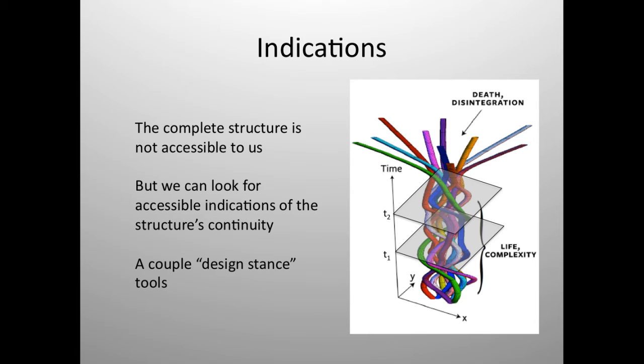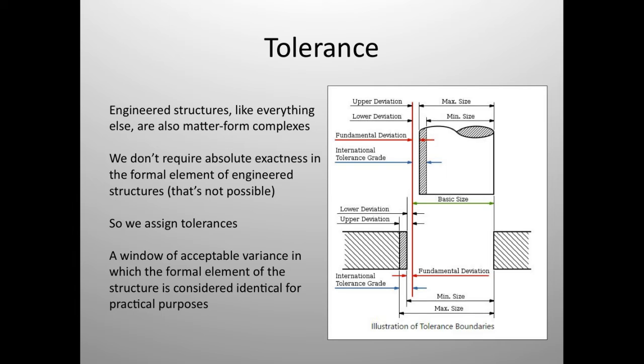Nevertheless, there must be some indications that we can draw from so that we can use this. So the complete structure, the 4D structure, isn't something that's accessible to us. We can't see the whole end from the beginning of a person's life all at once. And we certainly can't see the future. But we can look for accessible indication of the structure's continuity. And one way that I like to think of this is to take a design stance. So these are some conceptual tools. And I'm drawing that idea of a design stance from Daniel Dennett. But if we think of the structure as something that we built, from a level of reduced dimension where we don't have complete and exact knowledge,